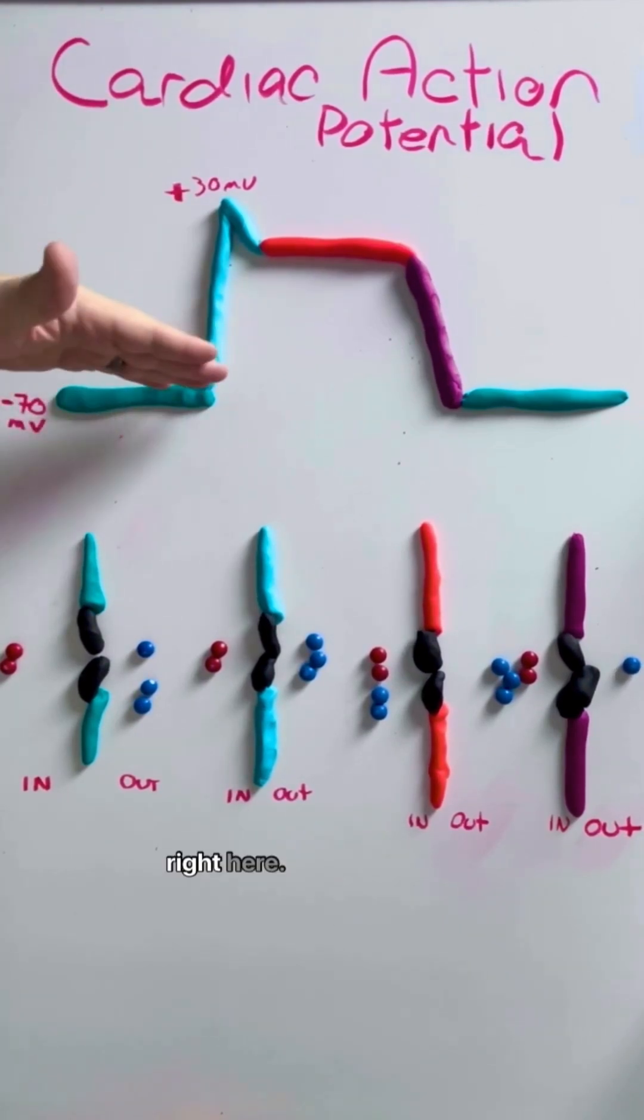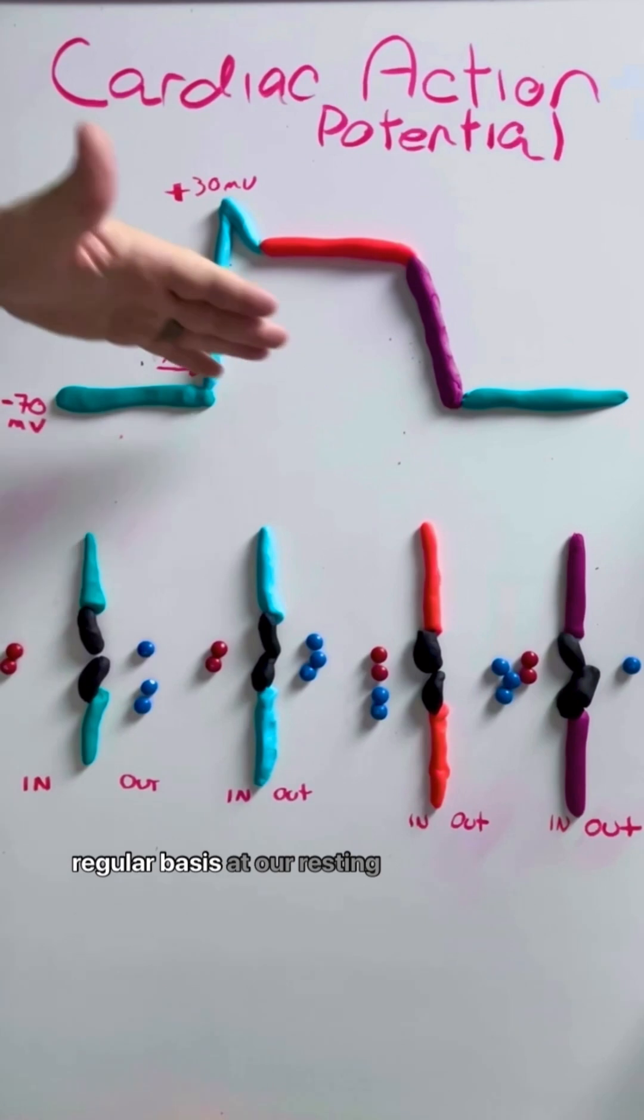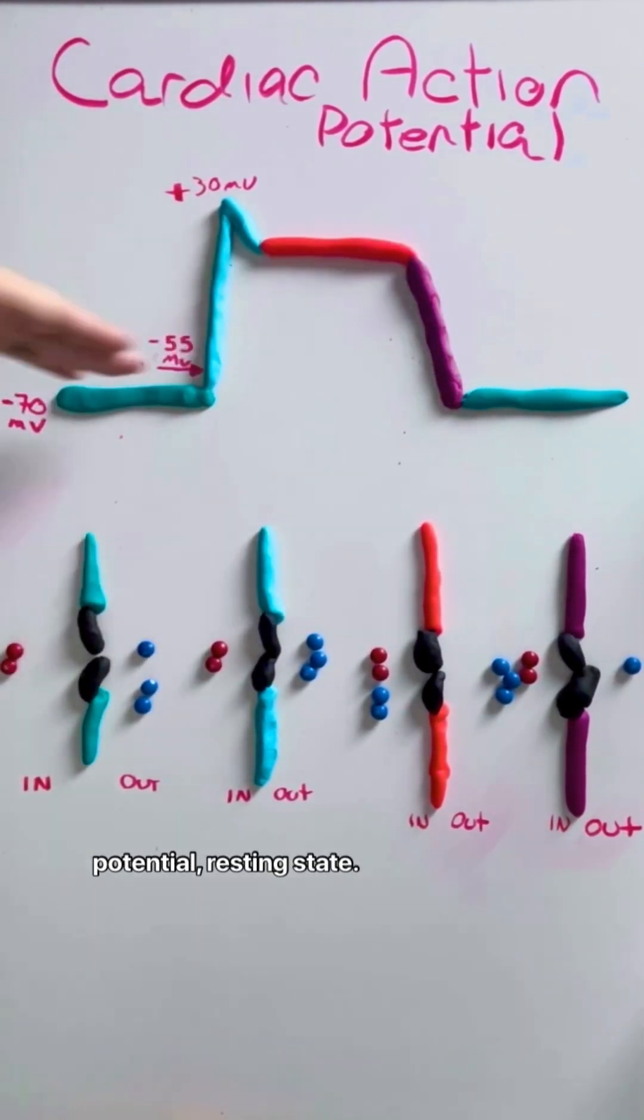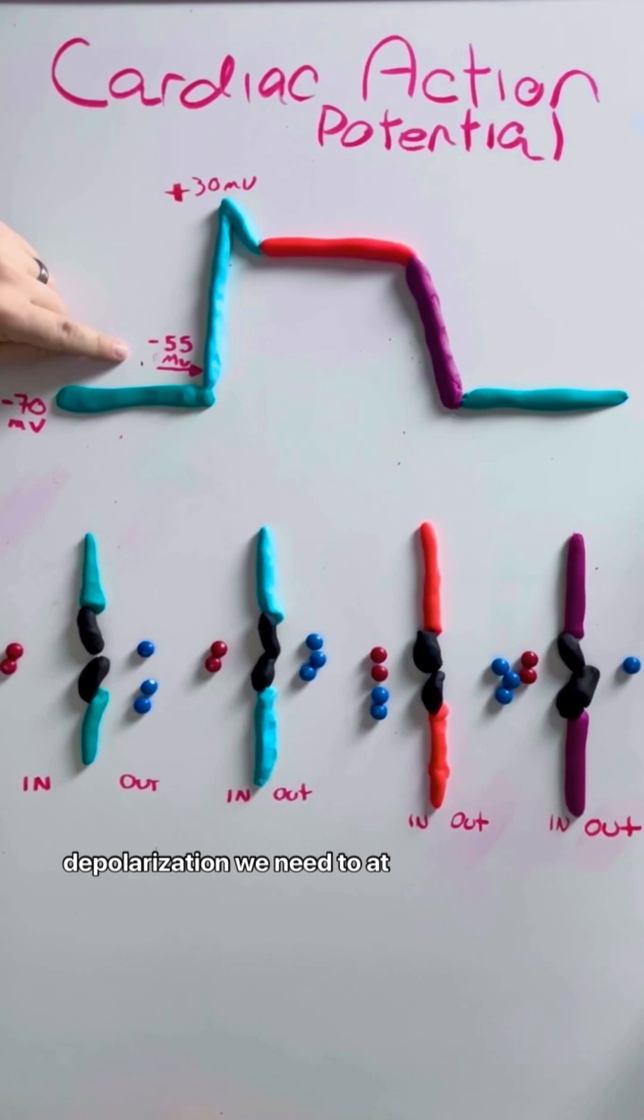This is our resting state right here. Our inside of our cells sit at about minus 70 millivolts on a regular basis at our resting potential, resting state. And then in order to create action potential or depolarization, we need to at least become a slightly more positive at minus 55.